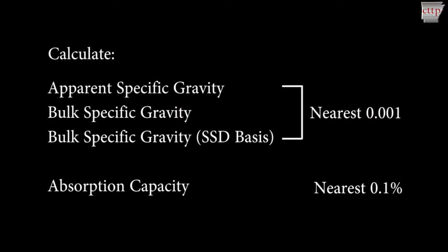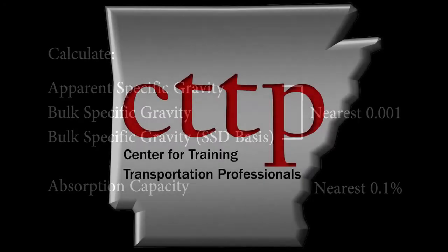Specific gravity and absorption values can now be calculated, including the apparent specific gravity, bulk specific gravity, bulk specific gravity based on the SSD condition, and absorption capacity. Specific gravity values should be reported to three decimal places, and absorption should be reported to the nearest tenth of a percent.